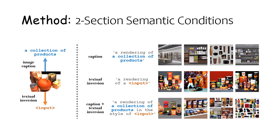The most straightforward way of getting a text prompt from the input image is to use an image captioning or classification network. However, while text description can summarize the semantics of the image, it leaves a huge space of ambiguities, making it hard to include all the visual details in the image, especially with limited prompt length.